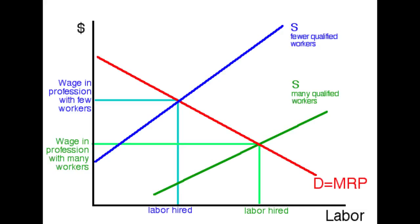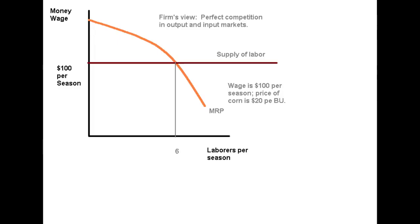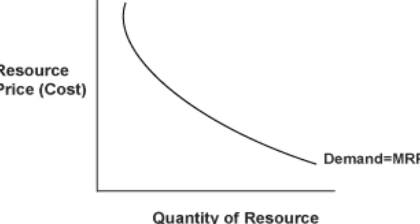The idea that payments to factors of production equilibrate to their marginal productivity had been laid out early on by such as John Bates Clark and Knut Wicksell, who presented a far simpler and more robust demonstration of the principle. Much of the present conception of that theory stems from Wicksell's model.